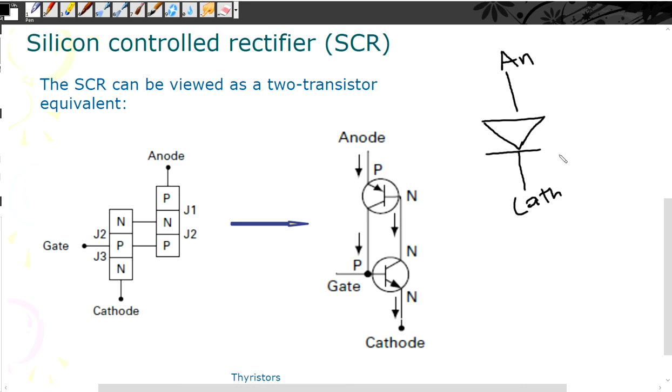The only difference between this diode and the SCR is that SCR has a gate. This is a gate. That's the only difference from the normal diode to SCR.